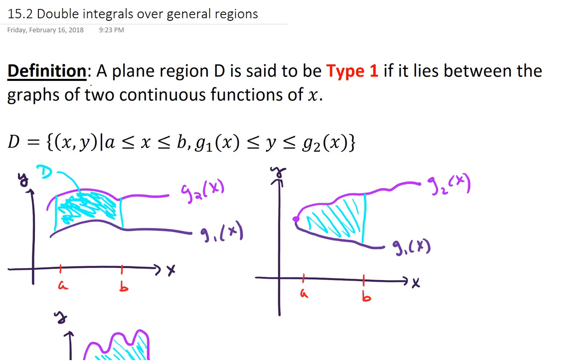Hello, in this video we're going to talk about double integrals over general regions. We'll begin with the definition. A plane region D is said to be type 1 if it lies between the graphs of two continuous functions of X.